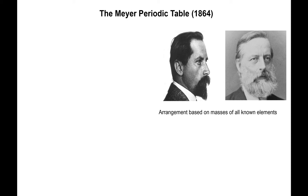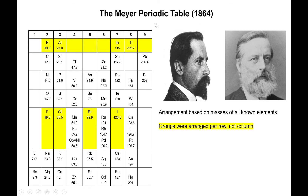About 25 to 30 years later, here is Mayer — in fact, a young Mayer and an old Mayer. What he did is he arranged all the known elements of the time in an early version of the periodic table. He actually did this before Mendeleev came up with his table. The main difference was that the elements were arranged per row as opposed to columns, so the table looked almost like the periodic table rotated 90 degrees on its axis.